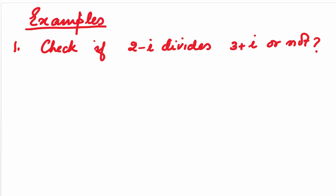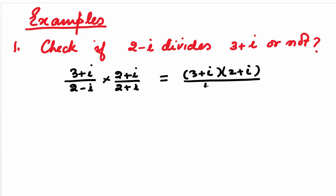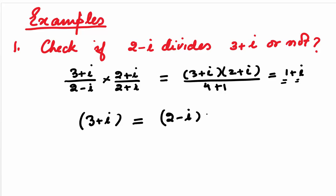For example, let's find whether 2 minus i divides 3 plus i. We write (3 plus i) divided by (2 minus i) and rationalize by multiplying and dividing by (2 plus i). This gives us (3 plus i)(2 plus i) divided by (4 plus 1), which simplifies to 1 plus i. Since 1 and 1 are both integers, the division is possible. So we can write 3 plus i as (2 minus i) times (1 plus i), where beta equals alpha times gamma.